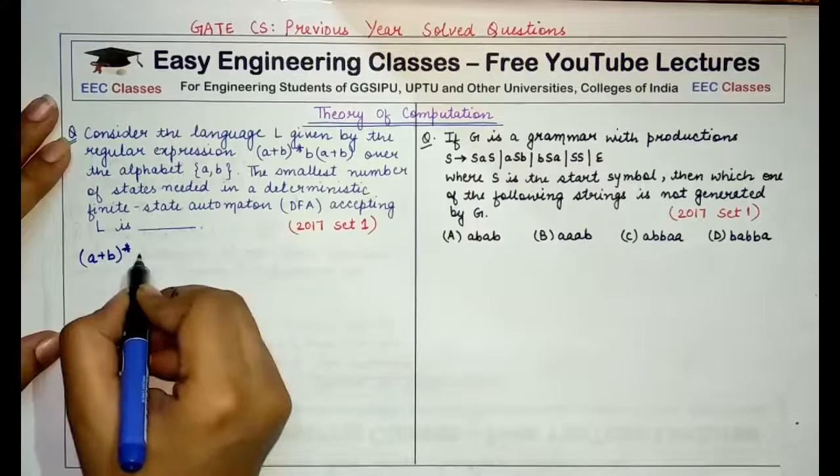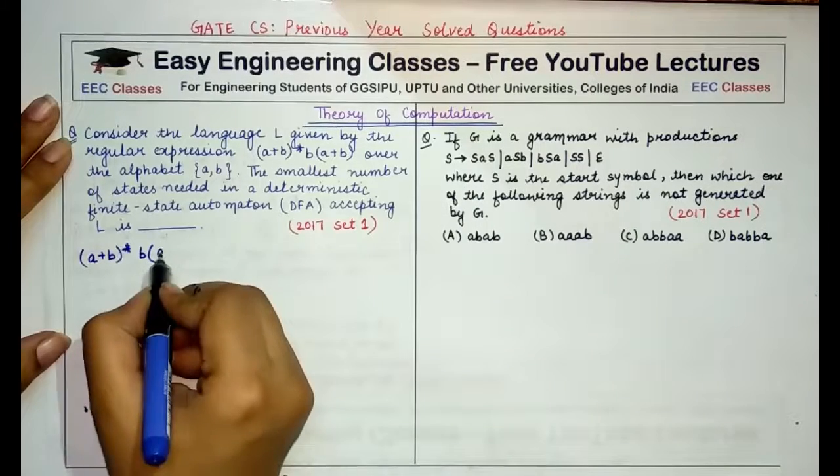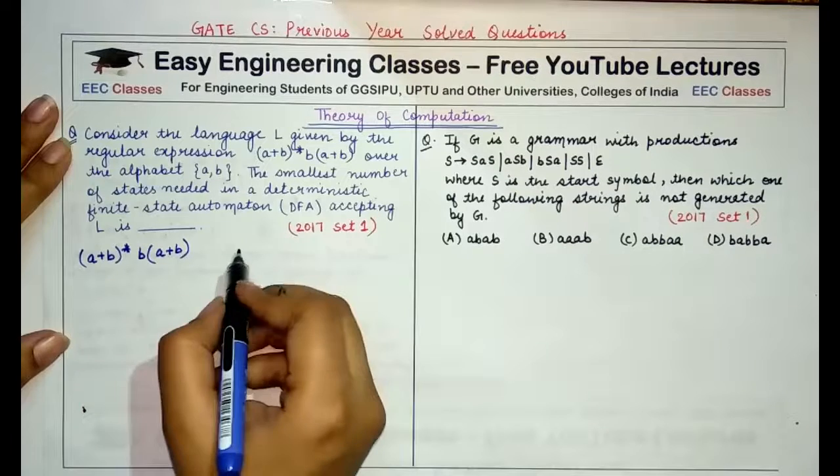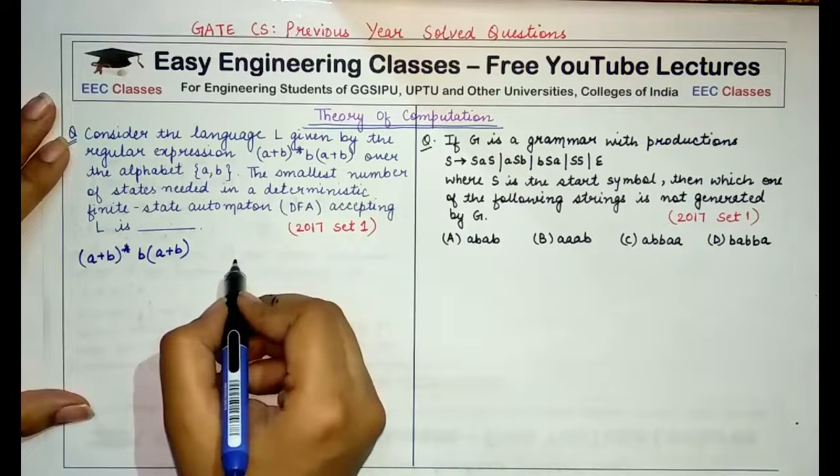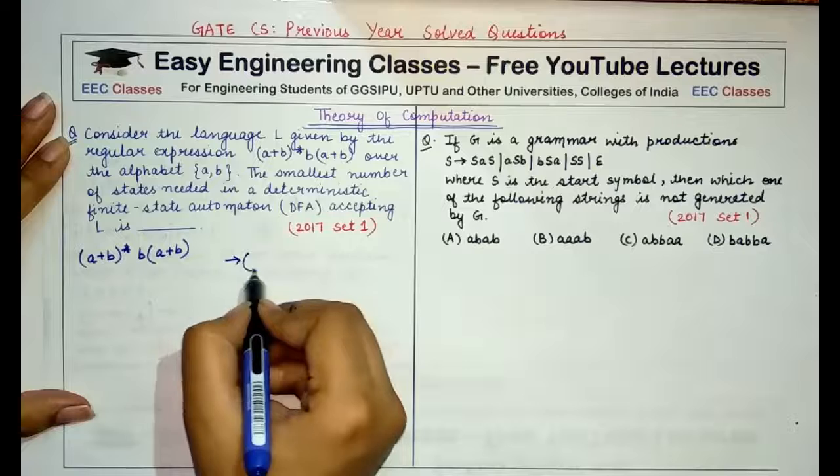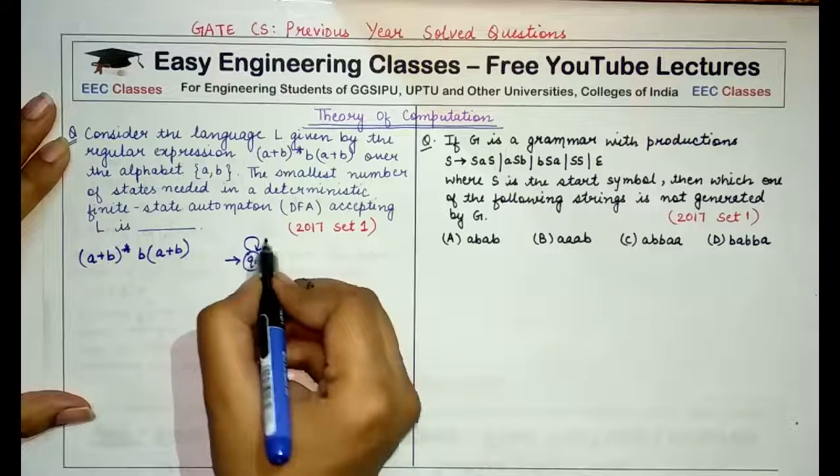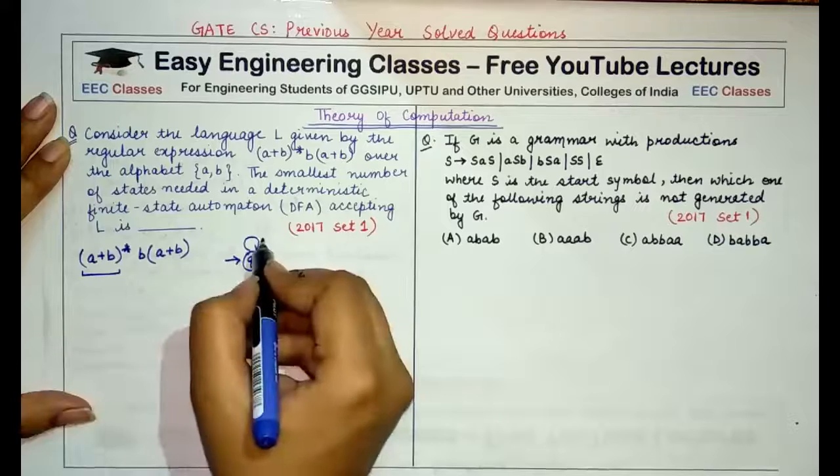The language or regular expression that we are provided with is (a+b)* followed by ab and followed by (a+b). If I draw an NFA for it before drawing a deterministic finite automata, I'll start with an initial state.